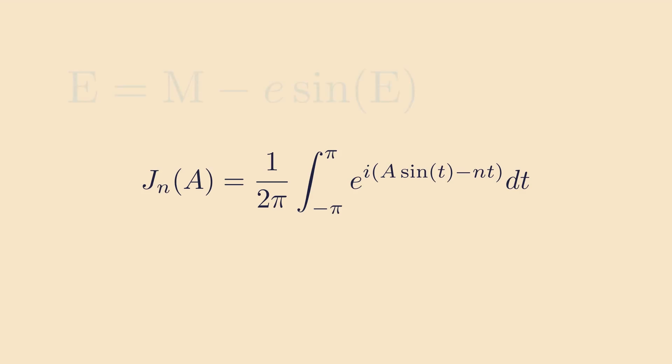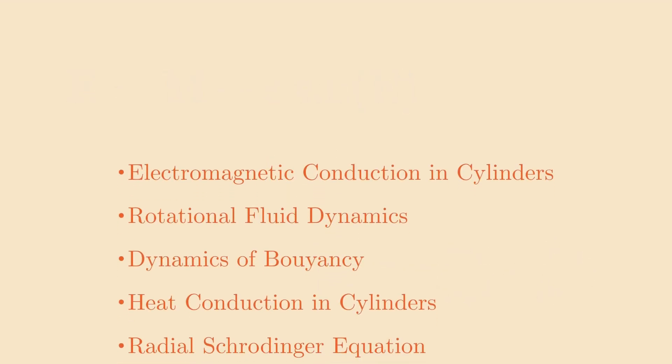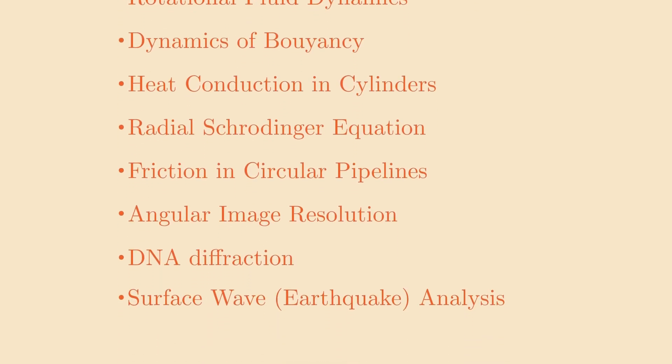Bessel functions are also the solution to Kepler's equation, which is astronomy, and to solve the electron distribution probabilities, quantum mechanics, as well as a whole host of other fields listed here. Why does the Bessel function appear in these totally unrelated fields? How is music possibly connected to astronomy and possibly connected to quantum mechanics?